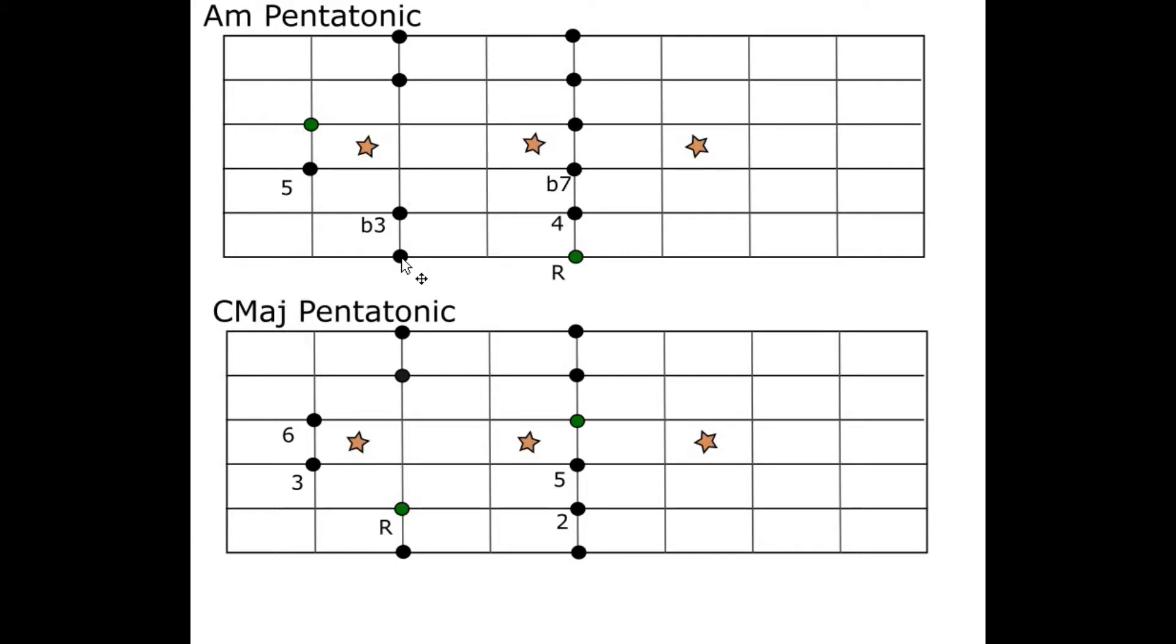And of course it's the same as all the other patterns in terms of going from minor to major. Find your flat third and rename that thing root. When we do so we find that now the root is on C so this is C major pentatonic and we can play through the pattern.